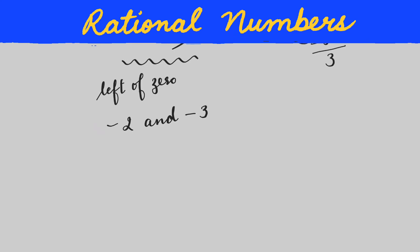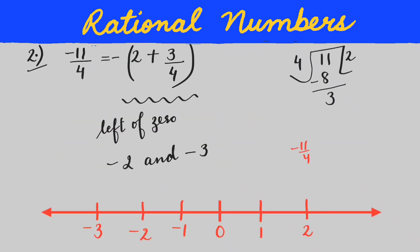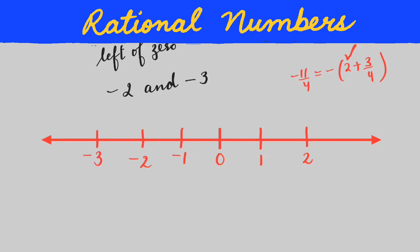We draw the number line with origin O in the middle, then -1, -2, and -3 on the left. We represent one and two on the right. The number lies between -2 and -3. We have written -11/4 = -2 + 3/4, so we start from -2 and move towards -3.